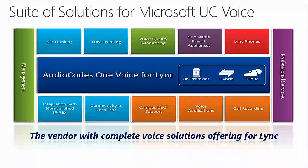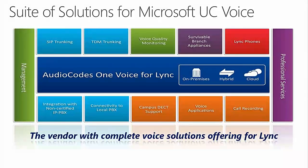What's involved in it? There are many different elements around the outside edge that are necessary to implement Lync: SIP trunking, integrating into TDM trunking, monitoring voice quality, survivable branch appliances, phones, call recording, voice applications, deck support, local PBX integration, and integrating with IP PBXs. We've taken all those attributes and combined them together through our One Voice strategy — a combination of our media gateways, enterprise session border controllers, survivable branch appliance devices, IP phones, and a number of software elements to manage and support them into a complete voice solution offering for Lync.